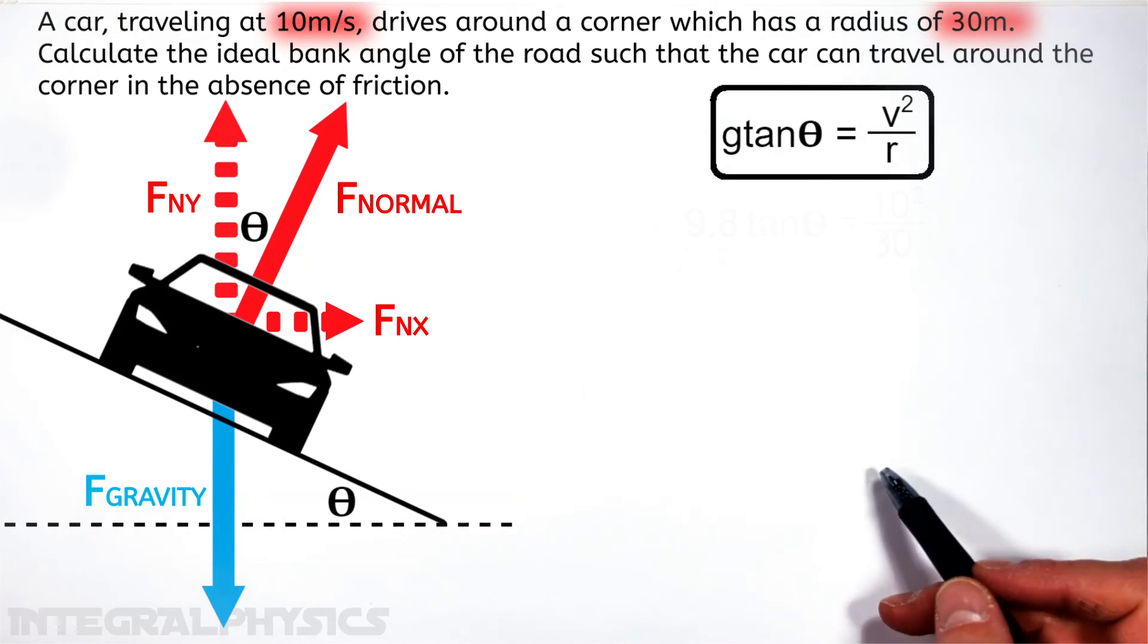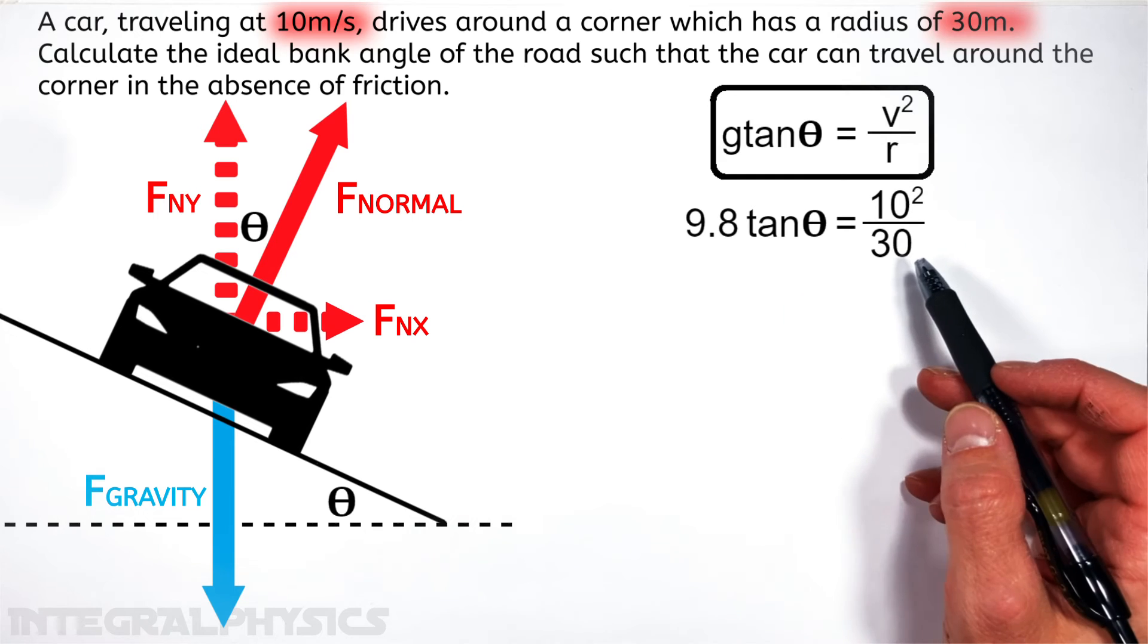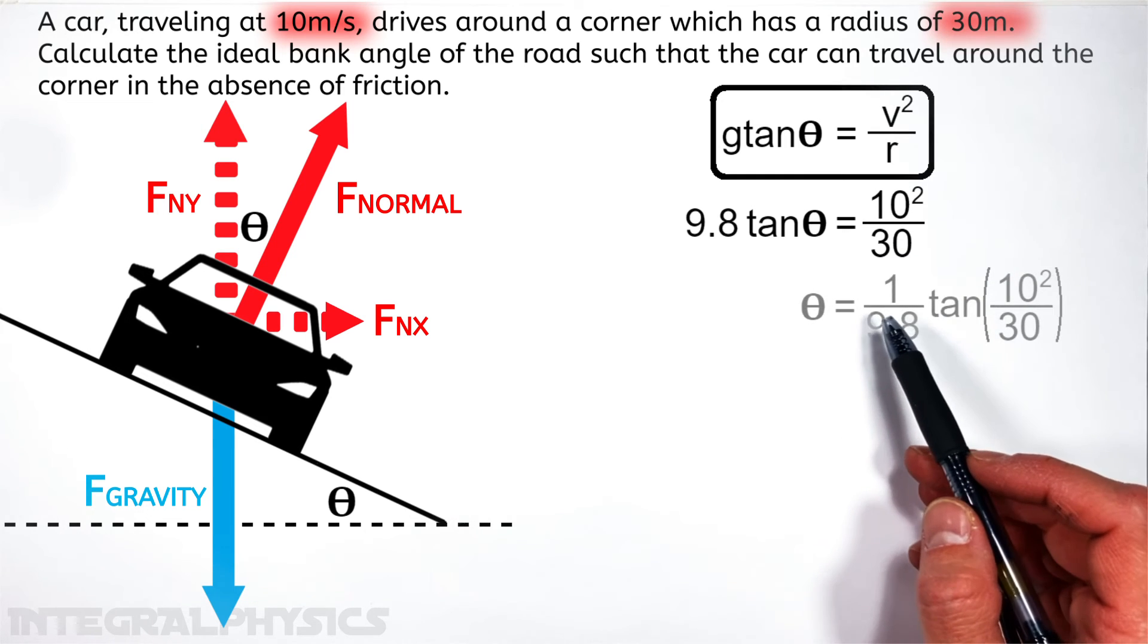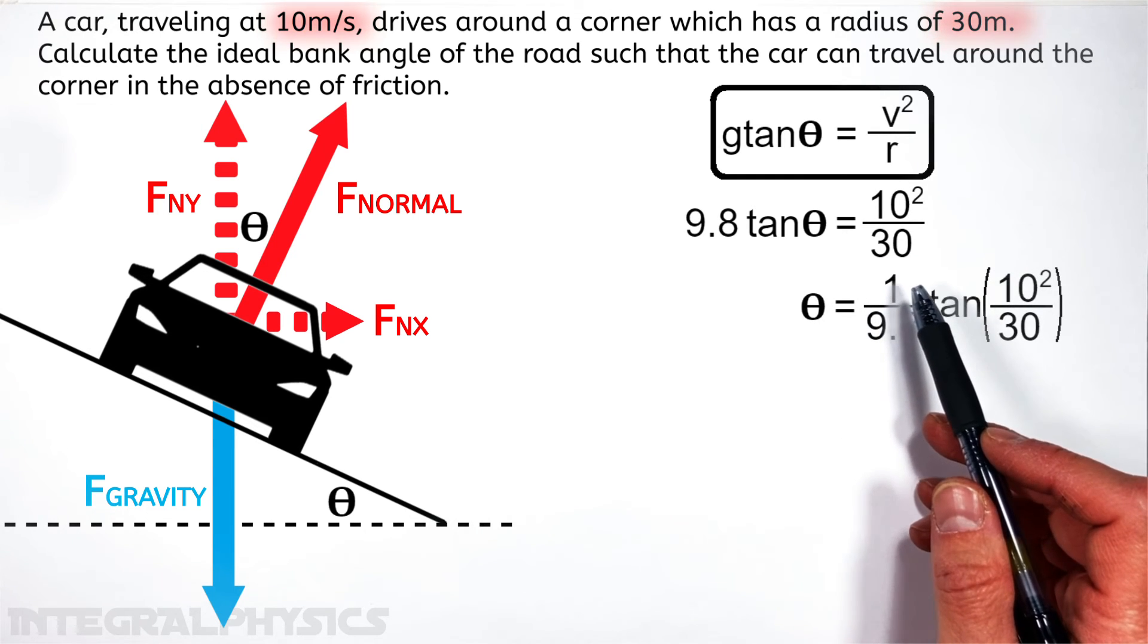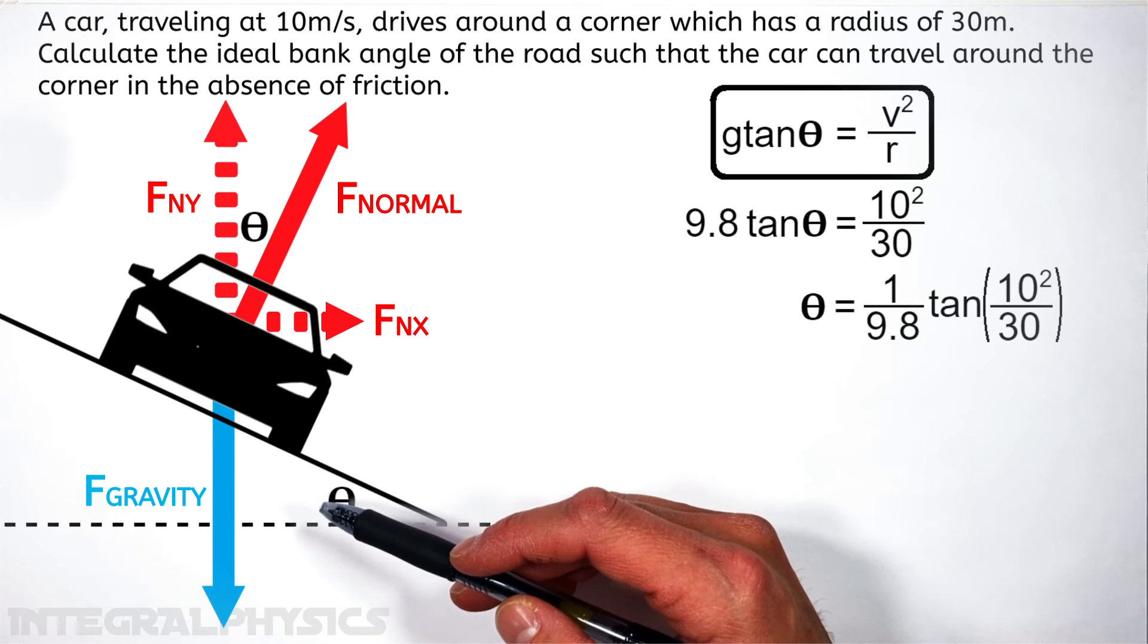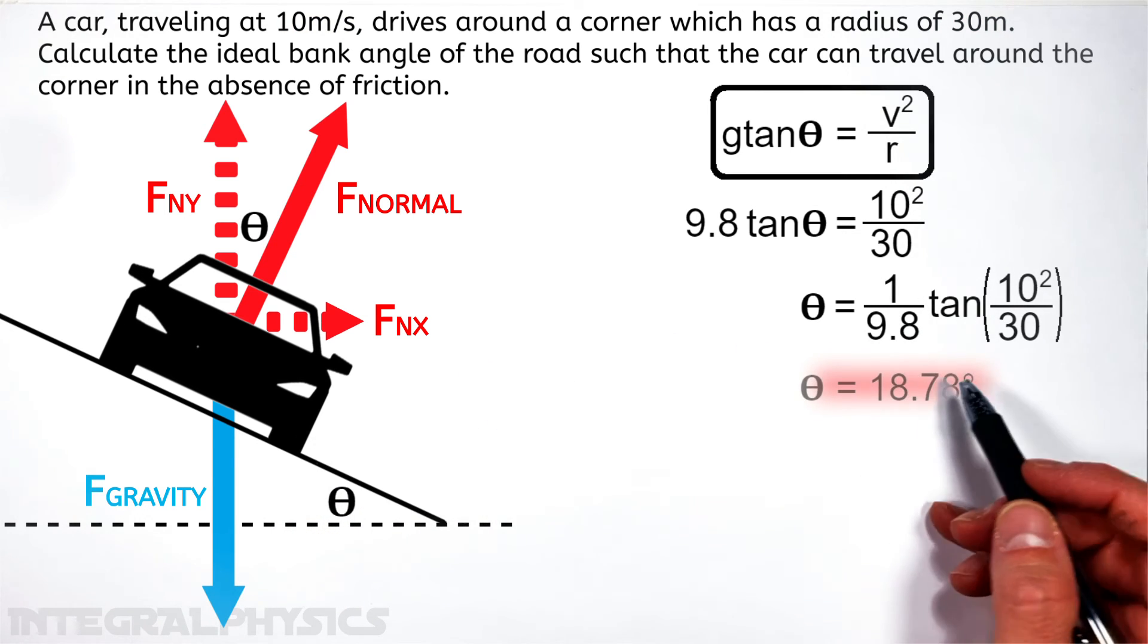So taking those numbers and plugging them into our equation, and then rearranging the equation for theta, we get the ideal bank angle of this road is 18.78 degrees.